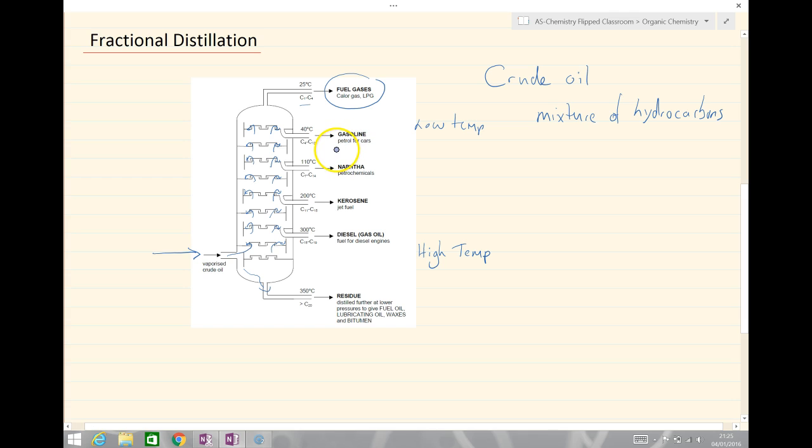Those with a slightly higher boiling point, C4 to C12, things like gasoline and petrols for cars, make it nearly to the top. Then we have things like naphtha for the petrochemicals.